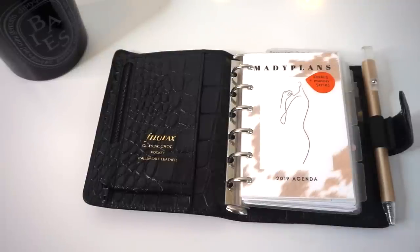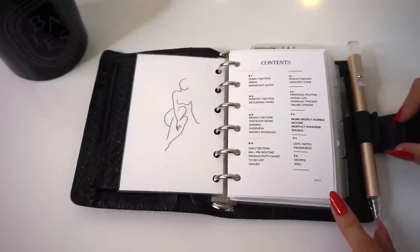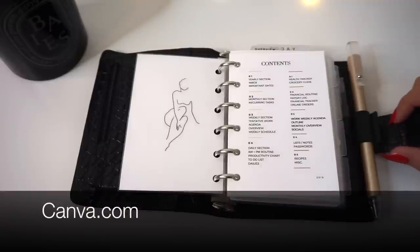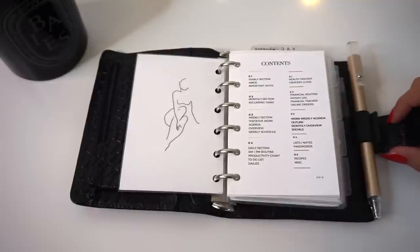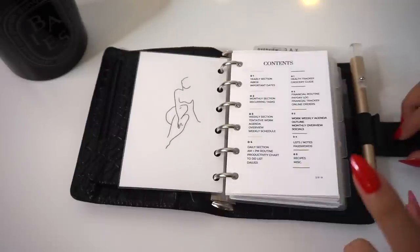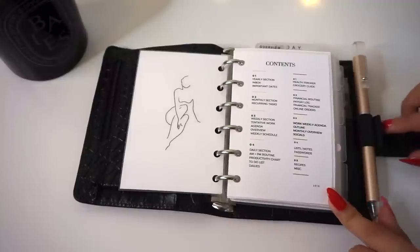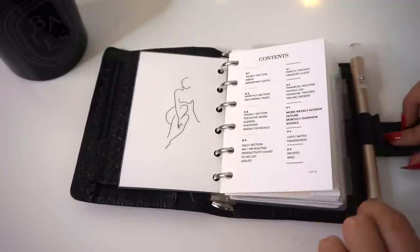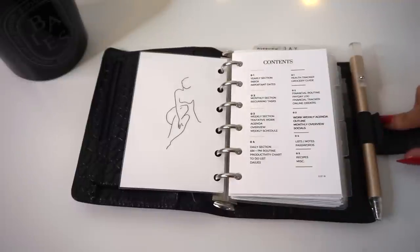The first thing I have here is my contents, and I made some inserts and all of my dashboards on Canva. You can do a lot of really fun cool creating on there. This first one is my contents page which basically just lays out what's in each section. I have four dividers in the front and six dividers in the back.